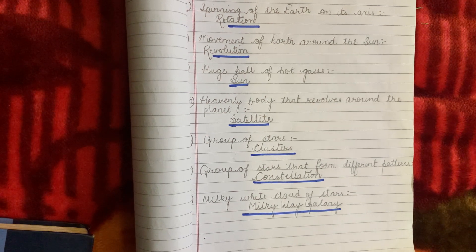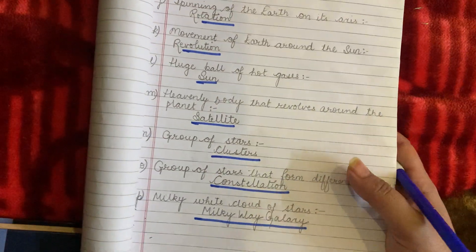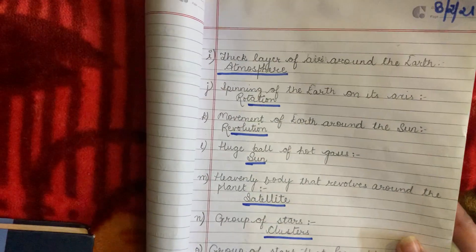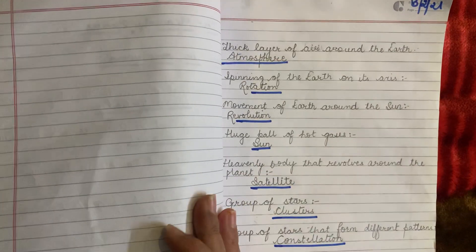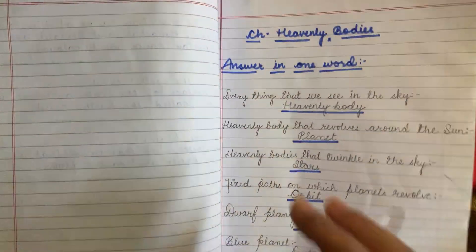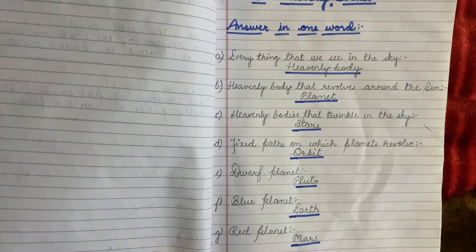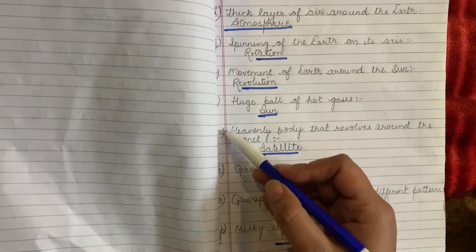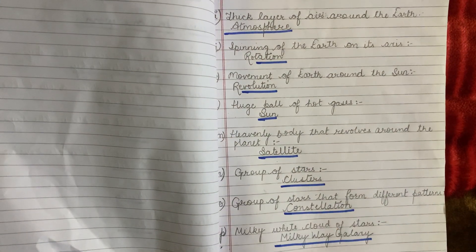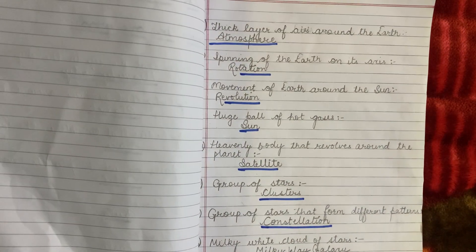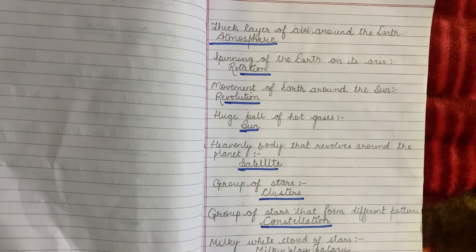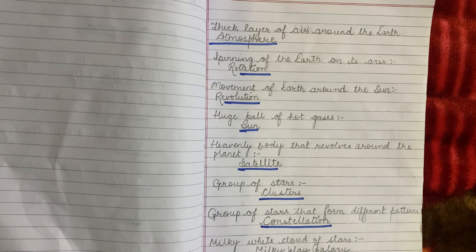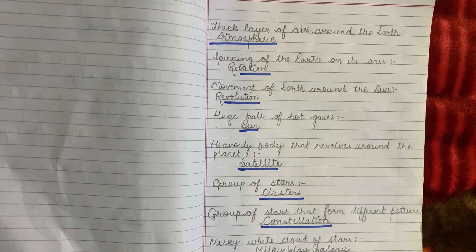You have to note down these one word question answers in your fair notebook. Yesterday we had done eight parts and today again we have done eight parts. Total we have 16 one word question answers that you are supposed to note down in your fair notebook neatly and get your notebooks checked.